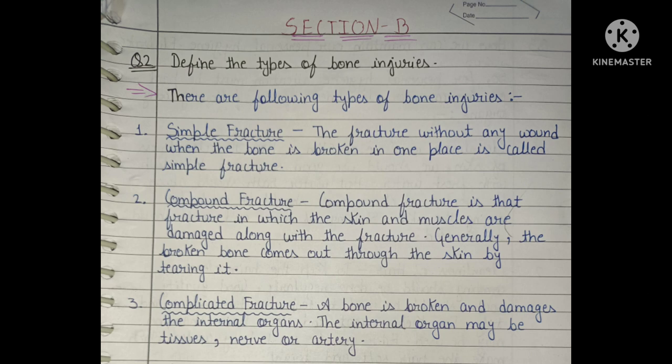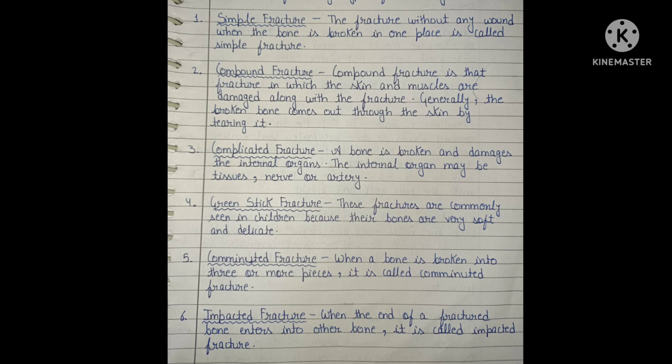Generally, the broken bone comes out through the skin by tearing it. Complicated fracture: a bone is broken and damages the internal organs; the internal organs may be tissues, nerve, or artery. Greenstick fracture: these fractures are commonly seen in children because their bones are very soft and delicate. Comminuted fracture: when a bone is broken into three or more pieces, it is called a comminuted fracture. Impacted fracture: when the end of a fractured bone enters into another bone, it is called an impacted fracture.